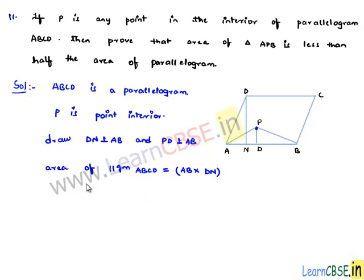Therefore, we got the area of parallelogram ABCD as product of AB into DN. Now, let us take area of triangle APB that is equal to half times base, that is AB, into height PD.